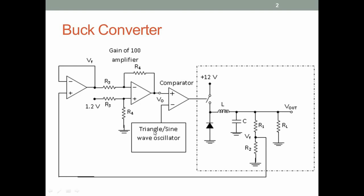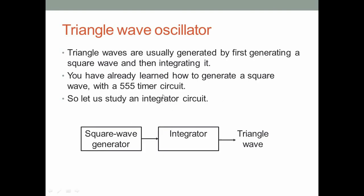Triangle wave oscillators are usually generated by first generating a square wave and then integrating that square wave — when you integrate a square wave you get a triangle wave. We have already designed a square wave with a 555 timer circuit in the EDC lab, so I am not going to discuss the generation of a square wave. I will assume you already know how to generate one using a 555 timer.